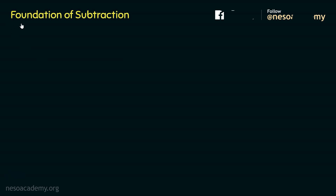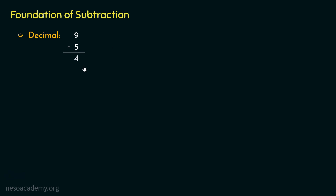We are going to build the foundation of subtraction using our familiar decimal number system. Let's perform a basic subtraction in decimal — say 9 minus 5, which gives us 4. The number from which we are subtracting is called the minuend, the value being subtracted is called the subtrahend, and the result is known as the difference. So the difference between 9 and 5 is 4.